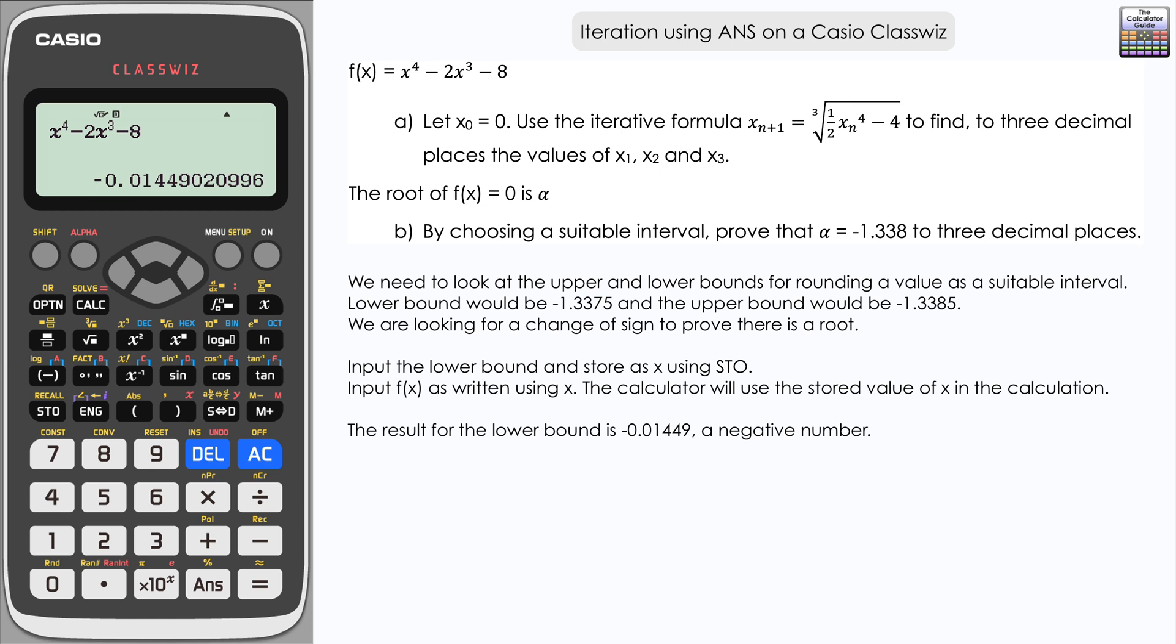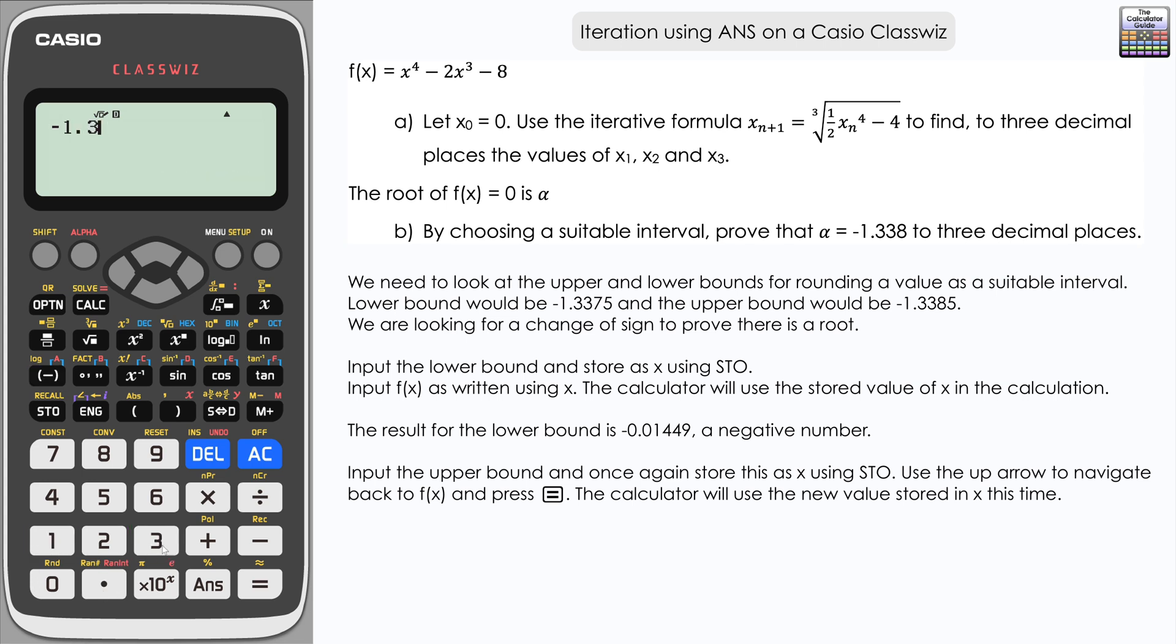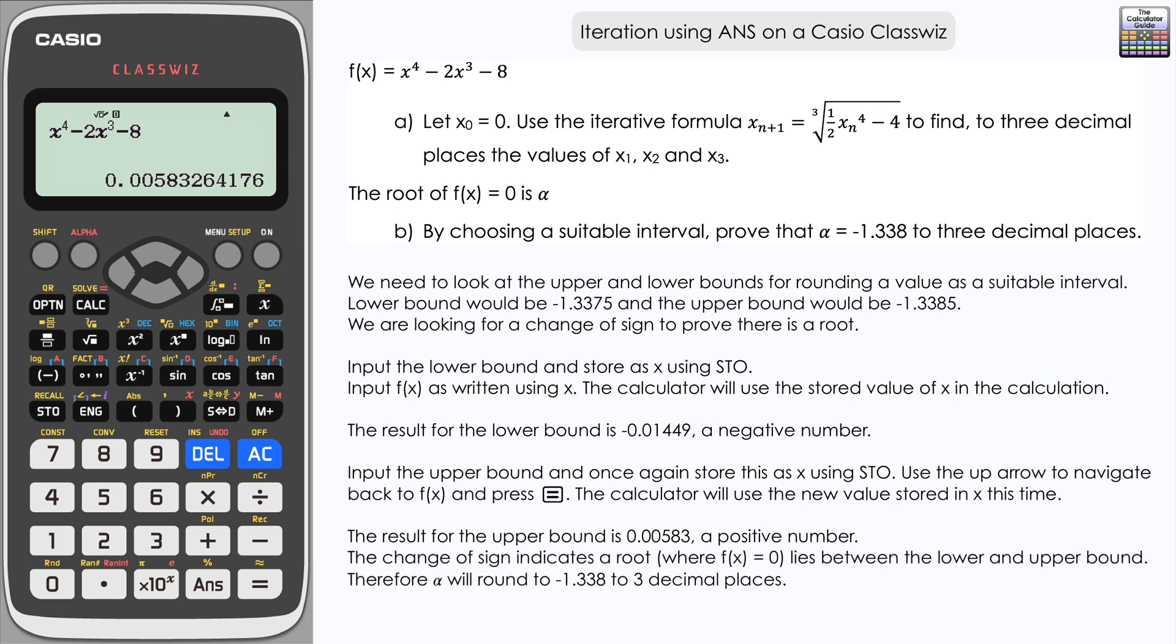That is negative, which is what we're hoping for. Now what we want to do is to use the upper bound, but I can use the formula that's already written in for f(x). All I need to do is store a different value of x. Let's type out the upper bound for the interval, which is negative 1.3385, and store in x. Use the up arrow to go back up, and if I just press equals again, the calculator will process that as the new value of x. So 0.00583 and so on—we can see that's a positive value. We've got a change of sign in between the interval there, so there must be a root, which is alpha, in between those two. Therefore, to three decimal places, alpha will round to negative 1.338.